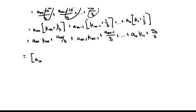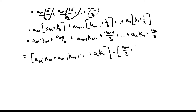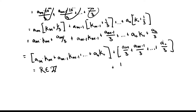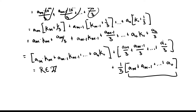I can group all the a_m × k_m terms together — integer times integer all the way down — which is just an integer, so I'll rewrite that as r. Then I can group all the a_m / 3 terms together and factor out one-third, giving one-third × (a_m + a_{m-1} + ... + a_0). By our assumption, that sum equals 3k.